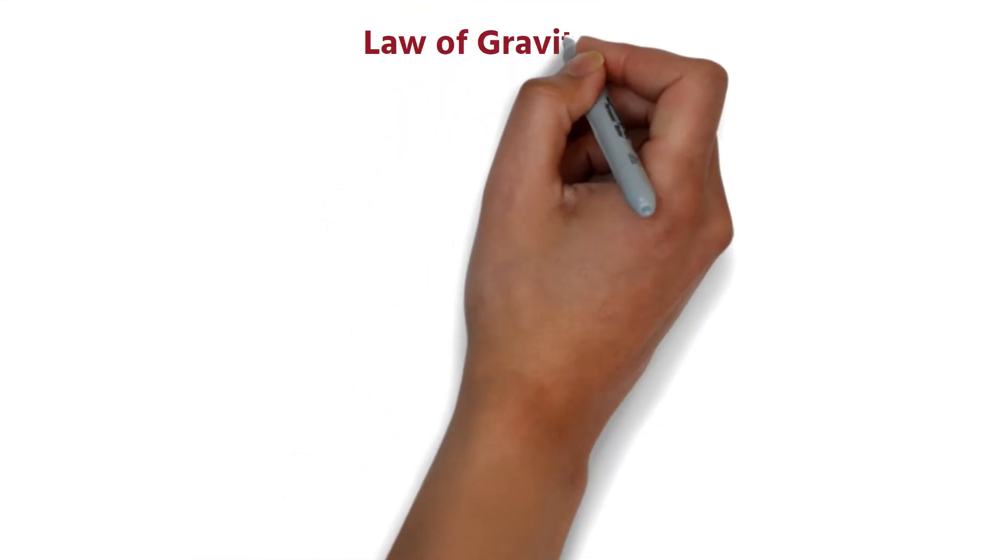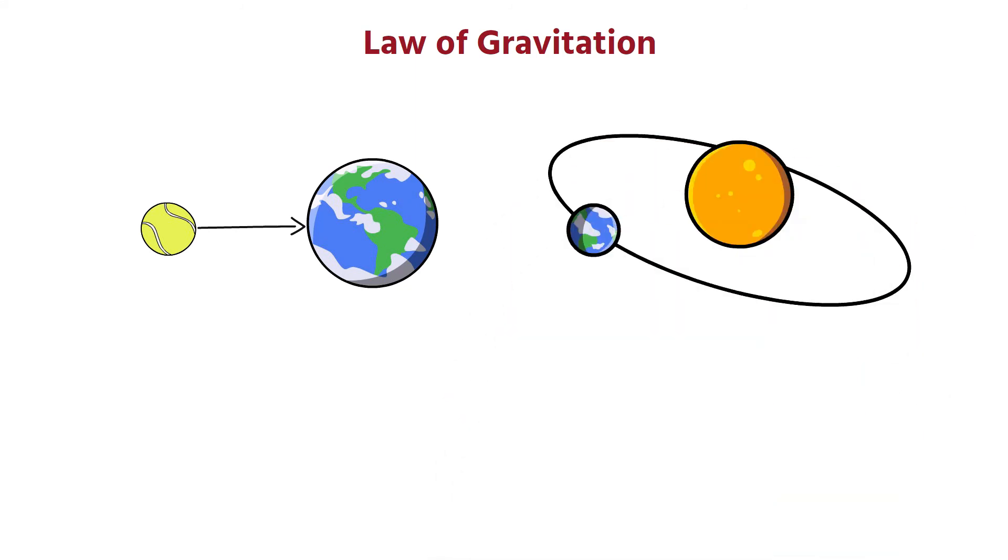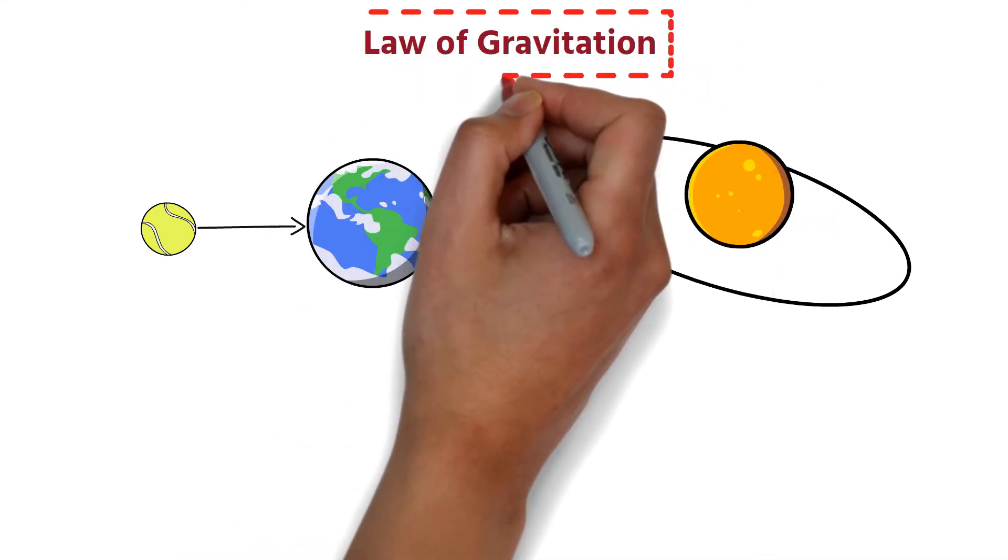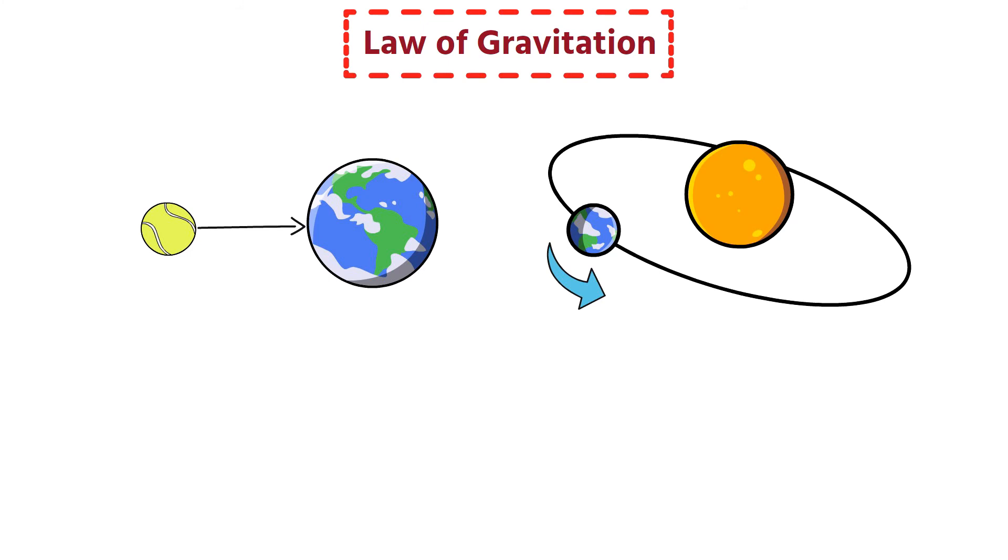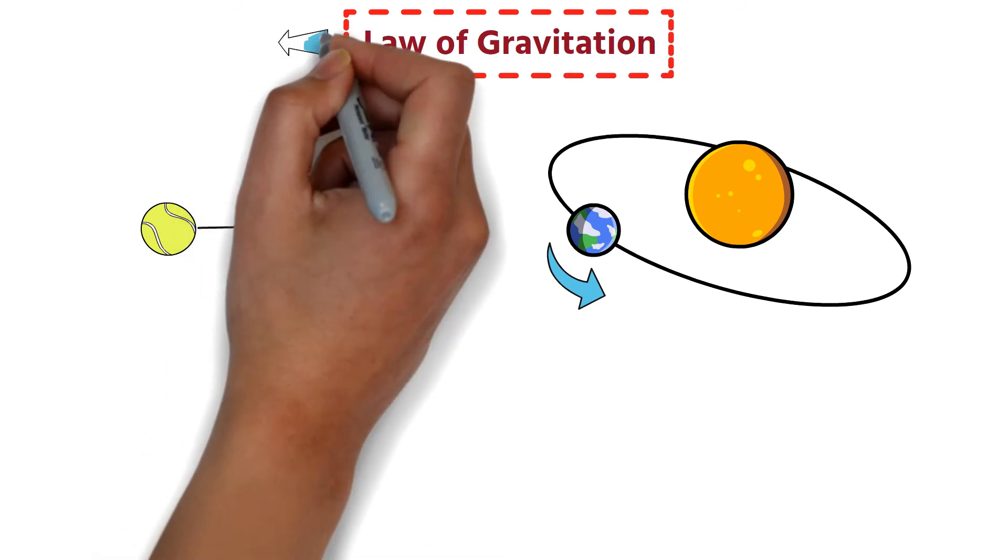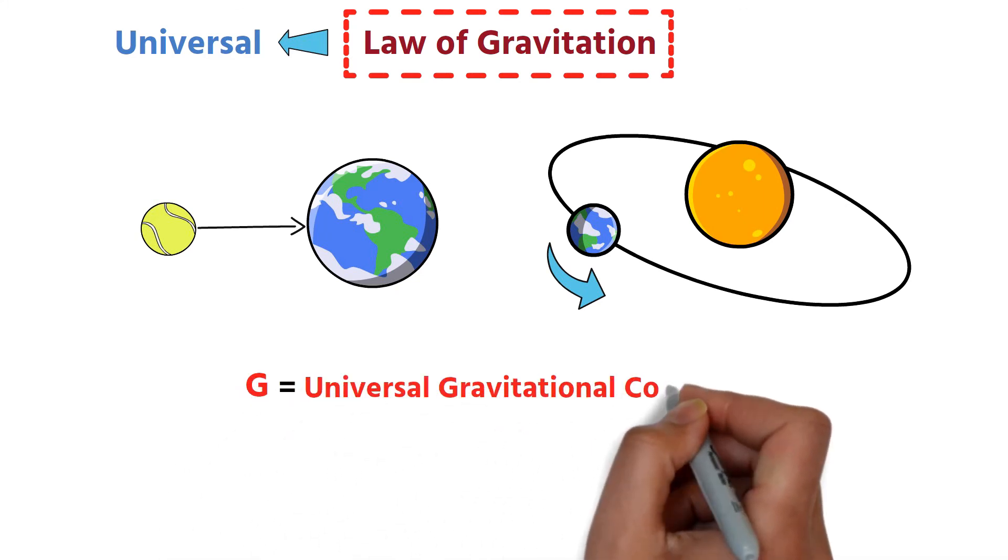The law of gravitation applies equally to the small distances between earthly bodies and very large distances such as the distances between planets and stars. With the help of this law, it is possible to clearly explain the motion of the planets around the sun. For these reasons, the law of gravitation is considered to be universal, and the gravitational constant is called the universal gravitational constant.